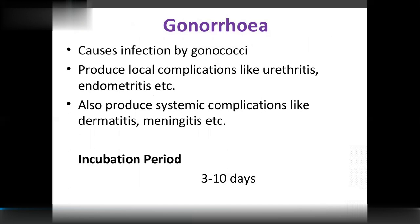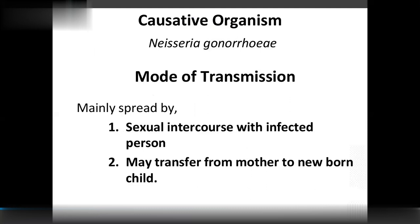It also causes endometritis — inflammation of the endometrium of the uterus — and produces systemic complications like dermatitis (skin inflammation) and meningitis. The incubation period is 3 to 10 days. The causative organism is Neisseria gonorrhoeae.